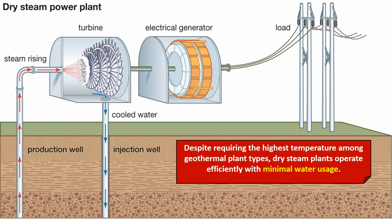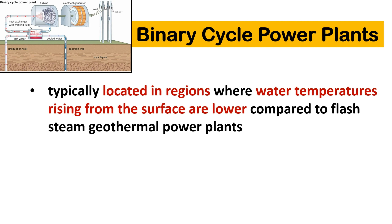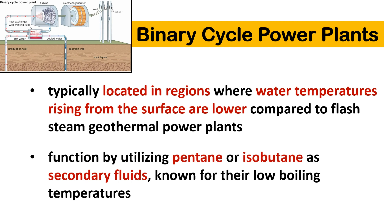Despite requiring the highest temperature among geothermal plant types, dry steam plants operate efficiently with minimal water usage. Binary cycle power plants are typically located in regions where water temperatures rising from the surface are lower compared to flash steam geothermal power plants. They function by utilizing pentane or isobutane as secondary fluids known for their low boiling temperatures.